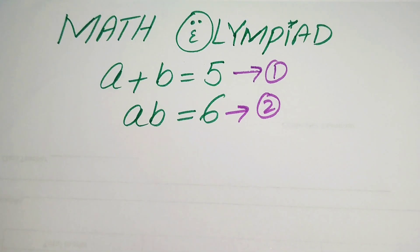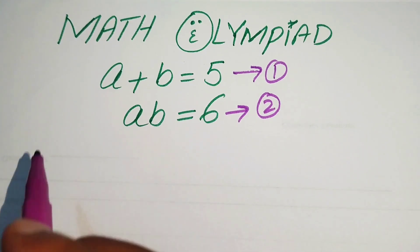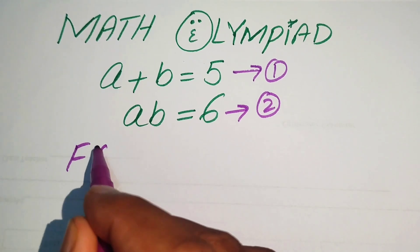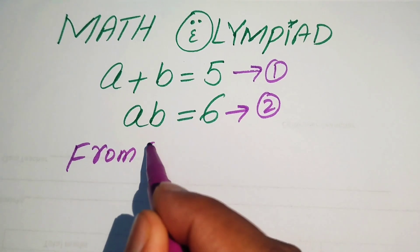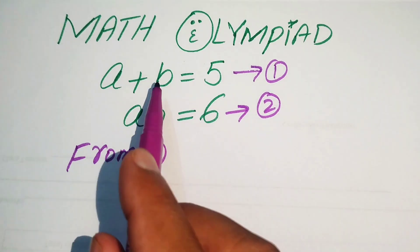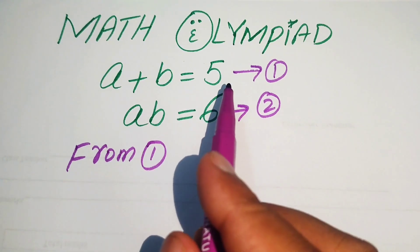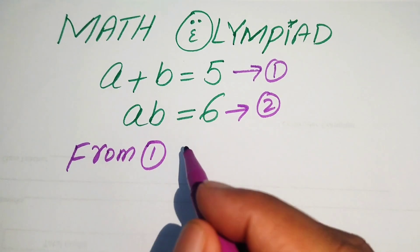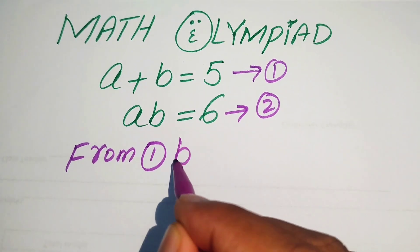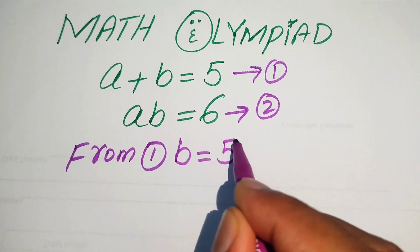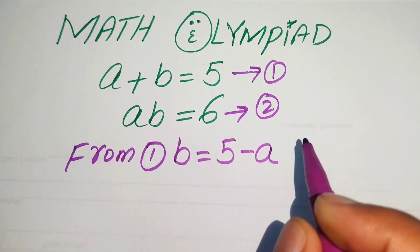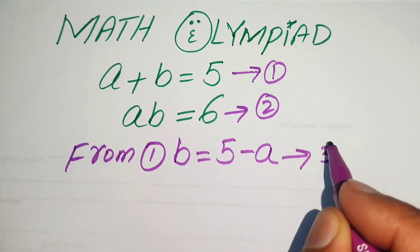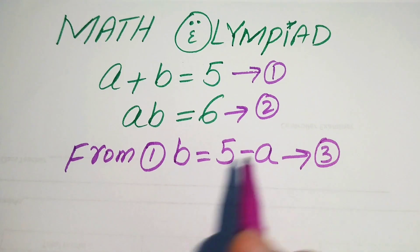We focus on these two equations to easily get the values of a and b. First, focusing on equation number 1, we move b to the right hand side and get the value of b equals to 5 minus a. We call this equation number 3.